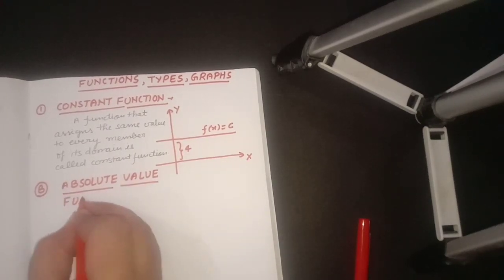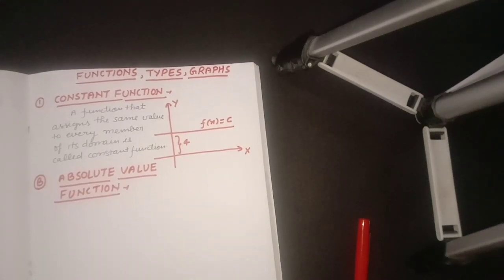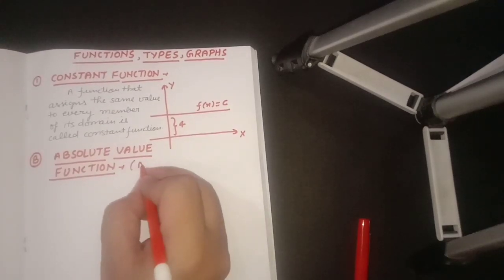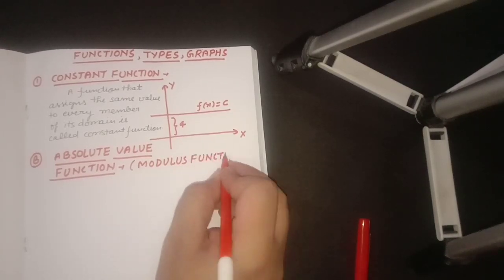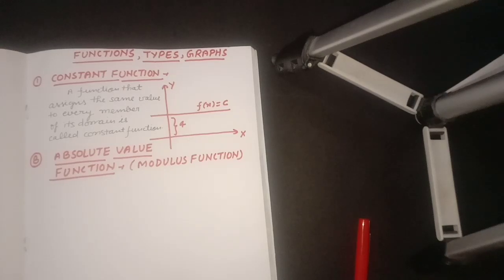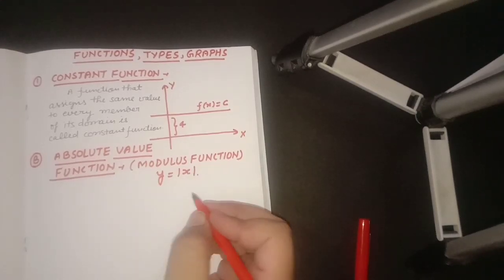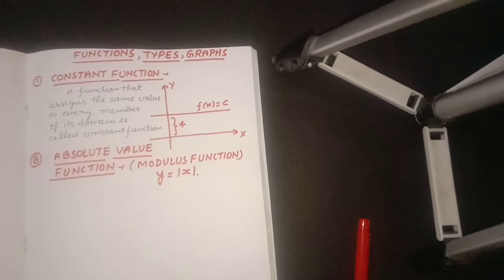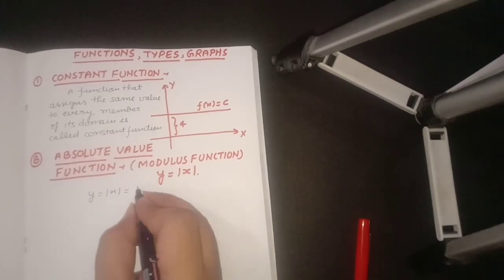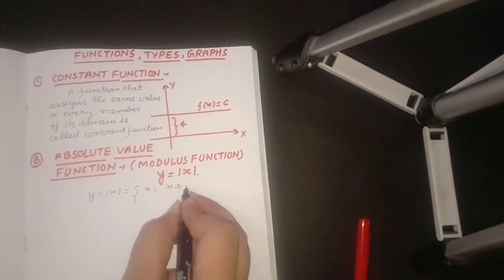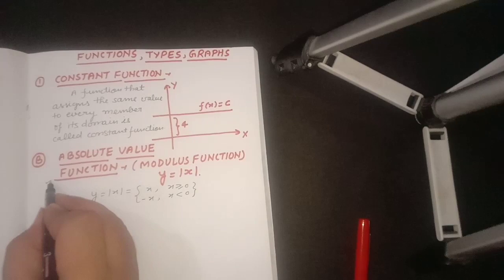The second type of function is the absolute value function, also known as the modulus function. In symbolic form it is represented as y = |x| or mod of x. It is defined in two parts: y = |x| equals x when x ≥ 0, and equals −x when x < 0.